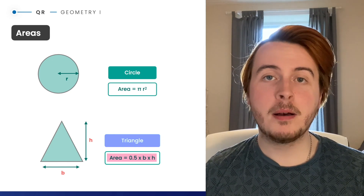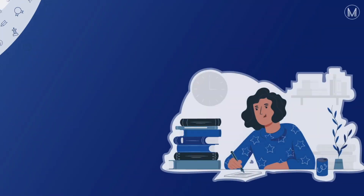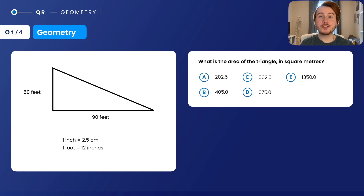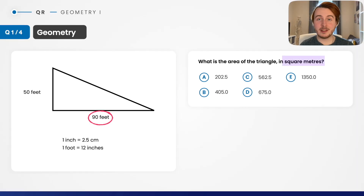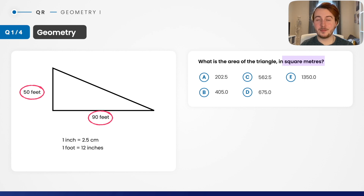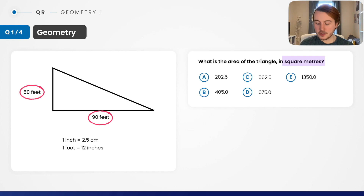We've recapped the basic formulas — there are a few others you'd be expected to know like a rectangle, but those are the main ones. If you want, pause the video and have a go at the first question. The first thing I notice is that it's a triangle, so I know the formula. The next thing I notice is I have different units — the sides are in feet but the answer options are in square meters.